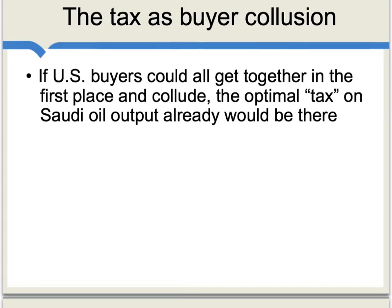We can think of this import tax as replicating a form of buyer collusion. If all U.S. buyers of Saudi oil could get together and collude, agreeing not to buy the oil unless the Saudis lower their price, that would redistribute income away from the Saudis and toward the United States. The import tax, in essence, is replicating that collusion. By imposing the tax, the U.S. government is getting U.S. buyers to be less willing to buy Saudi oil, and the only way the Saudis can counteract that is to lower the price of their oil.